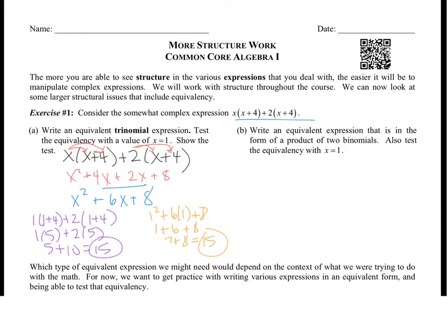Now we need to write an equivalent expression in the form of a product of two binomials, and also test the equivalency with X equals 1. Looking at the original expression, I have X plus 4 and X plus 4 — X plus 4 is being multiplied twice. We find what it is being multiplied by: there's an X and a positive 2, so X plus 2 becomes the other binomial. So the factored form is X plus 2 times X plus 4, which is the same as the original and the trinomial — all three expressions are equivalent.